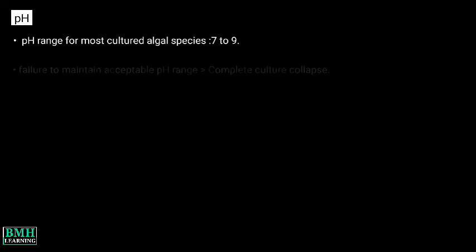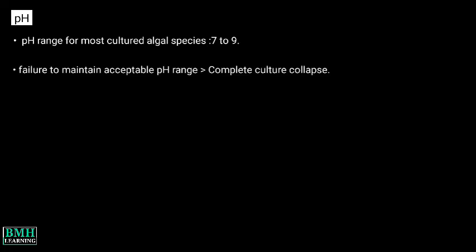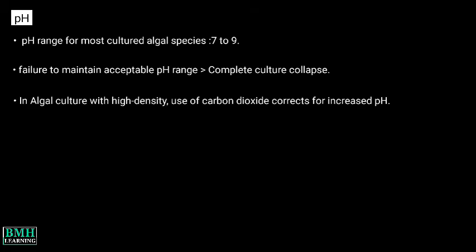Next is pH. The pH range for most cultured algal species lies between 7 to 9. A failure to maintain an acceptable pH range can result in complete culture collapse because of disruption of many cellular processes. In algal cultures with high density, the use of carbon dioxide corrects for increased pH.